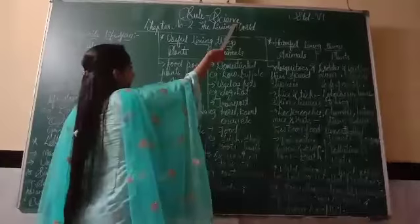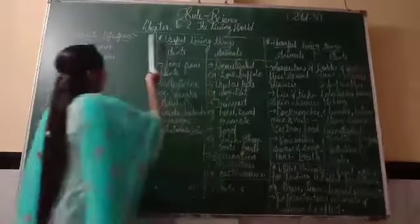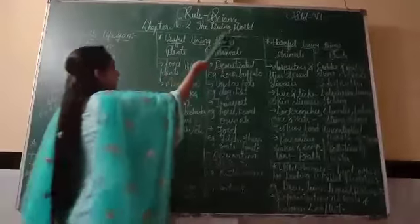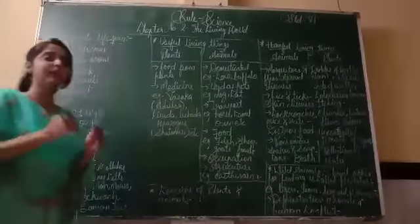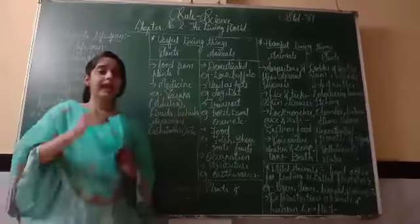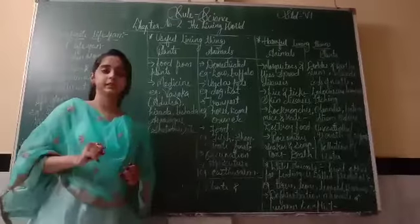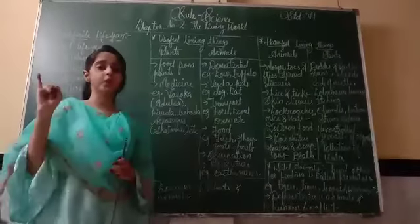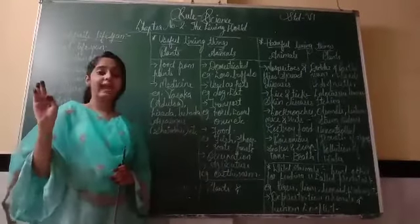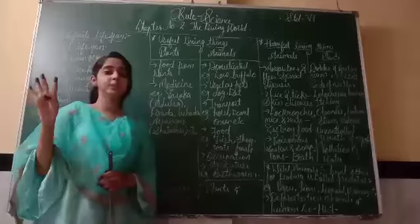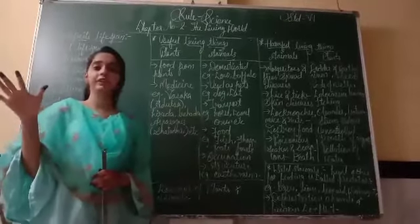Today we will do the subject science of grade 6, and our chapter number 2 is the living world. We have already discussed the living world and their characteristics. There are 5 characteristics: first is growth, second is respiration, third is excretion, fourth is responsiveness to stimuli, and fifth is reproduction.